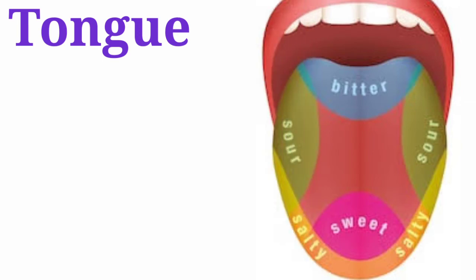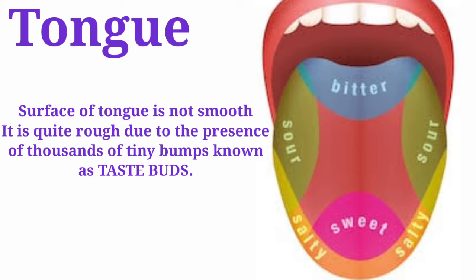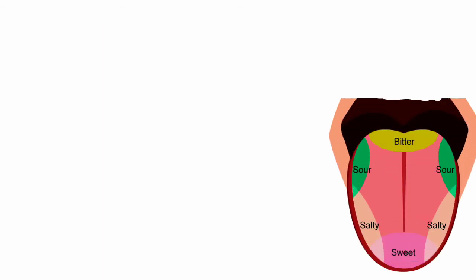As we know, the tongue is a sense organ that helps us taste food. The surface of the tongue is not smooth; it is quite rough due to the presence of thousands of tiny bumps. These bumps are known as taste buds. The taste buds help us detect different kinds of tastes like salt, sweet, sour, and bitter.